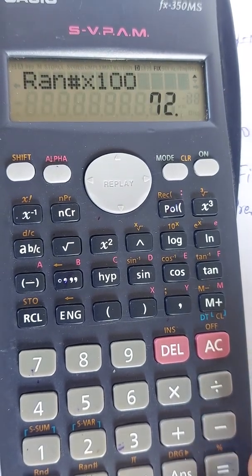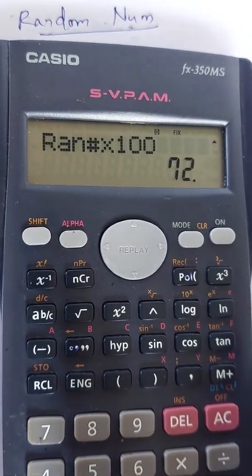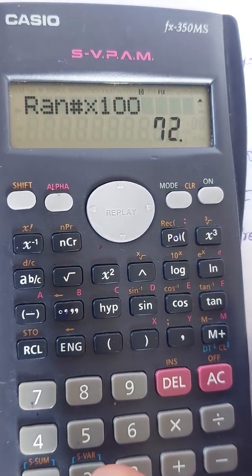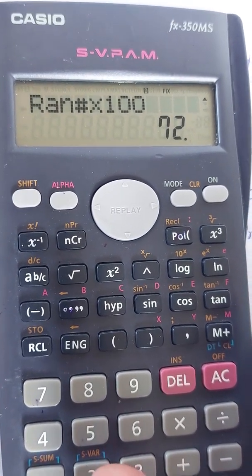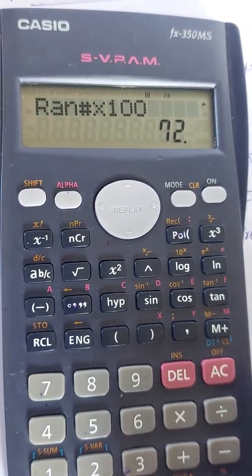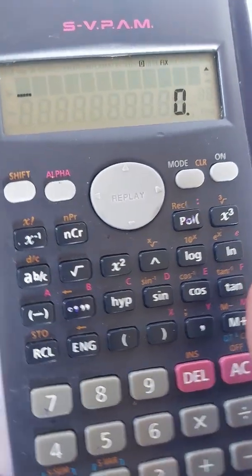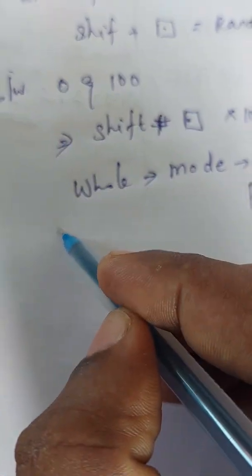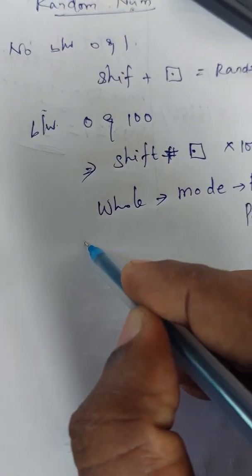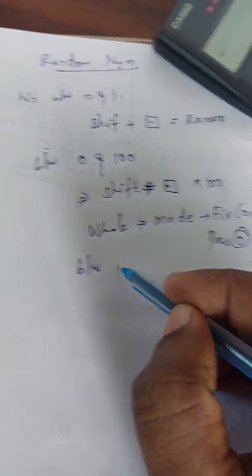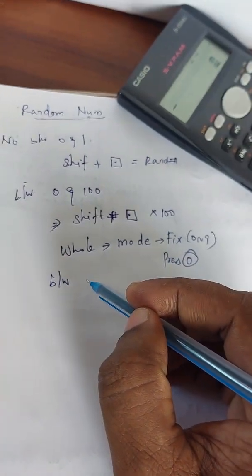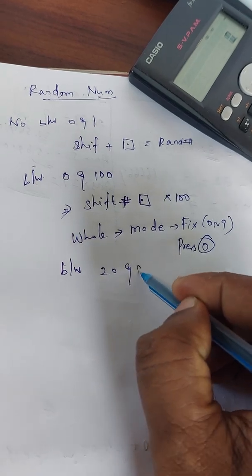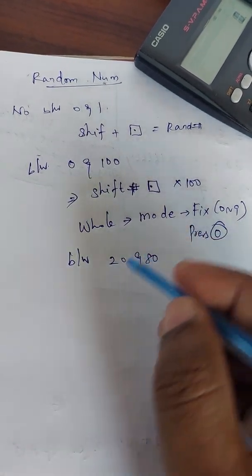This is how we can generate random numbers between 0 and 100 as whole numbers. Now, if you want to generate numbers within a particular range — for example, between 20 and 80 — how can you do that?